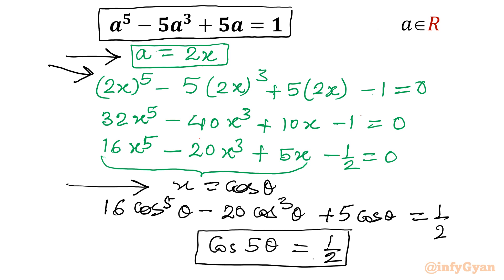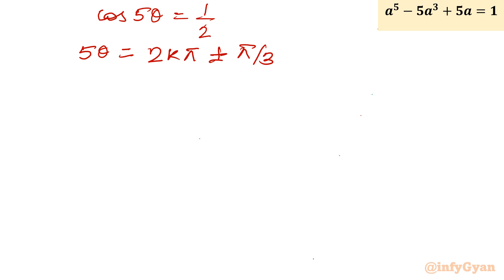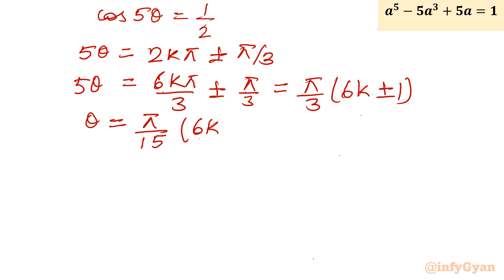So let me solve cos 5θ = 1/2. For the general solution, cos 5θ = 1/2 gives 5θ = 2kπ ± π/3, since cos 60° = cos(π/3) = 1/2. Taking a common denominator, we write 5θ = (6kπ ± π)/3, and factoring out π/3 gives 5θ = (π/3)(6k ± 1). Dividing both sides by 5, θ = (π/15)(6k ± 1).